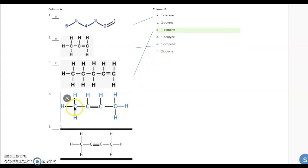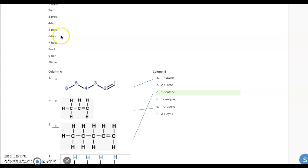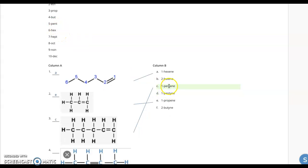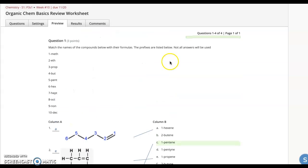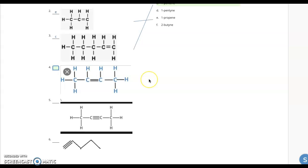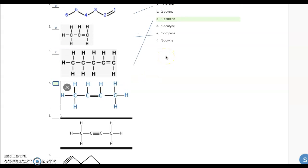And this one right here, we got four carbons. So prefix for four is but. So butene, E-N-E is this one. It's letter B. All the answers will be used. I'll fix that.